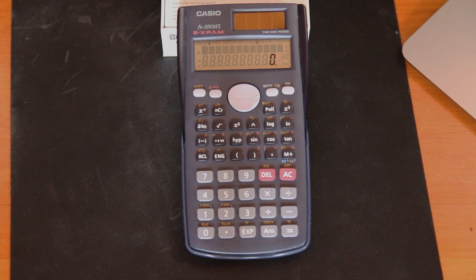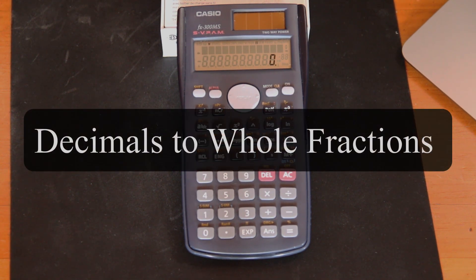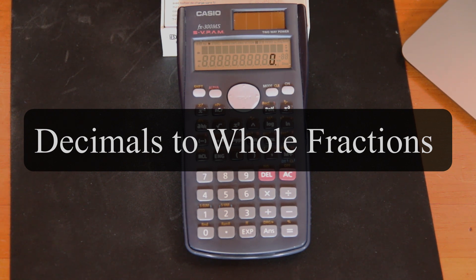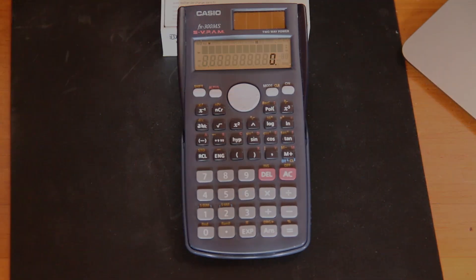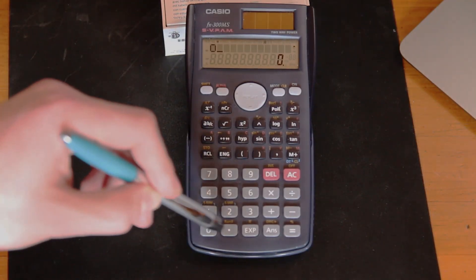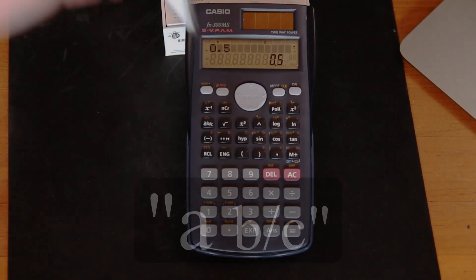Okay, so the first thing you want to do when converting from decimals to fractions or from fractions to decimals is to write in the decimal that you want to convert. First thing you want to do is put in, we're going to put in 0.5 here.